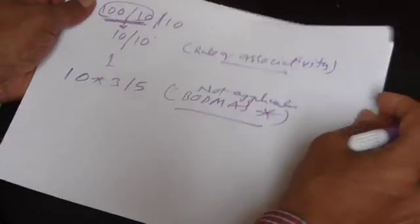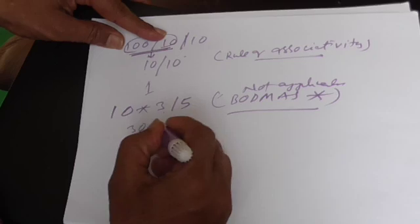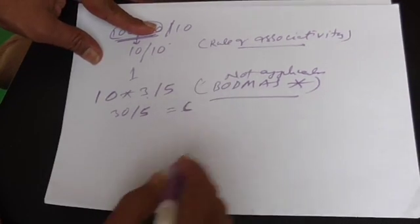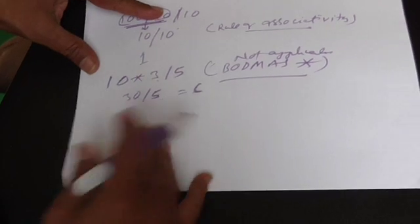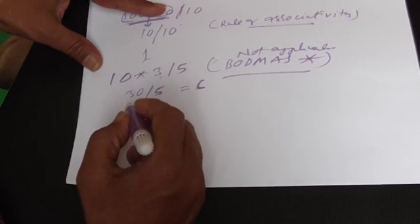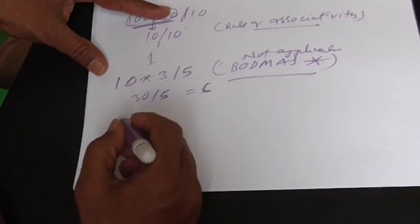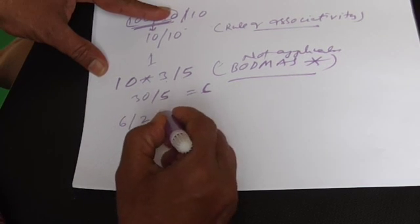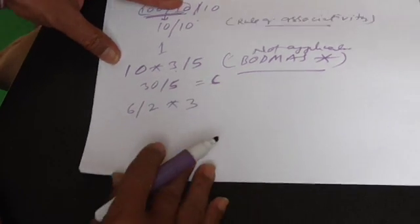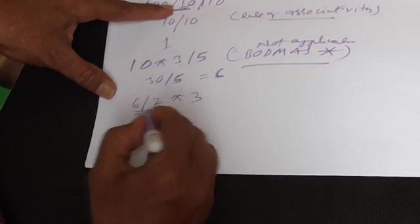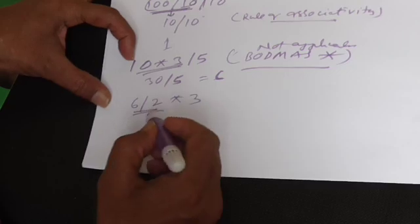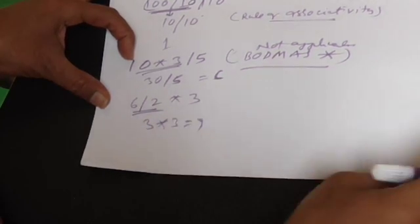As per that, it is 10 into 3, this is 30 by 5. So 30 by 5, the answer is 6. It's very important. For example, if you say 6 by 2 into 3, here the division is performed first. In this case, in the earlier one, multiplication, here the division, so 3 into 3. The answer is 9.